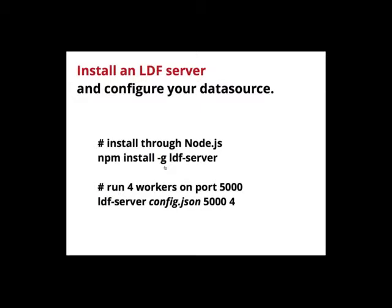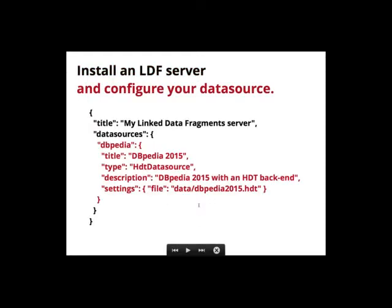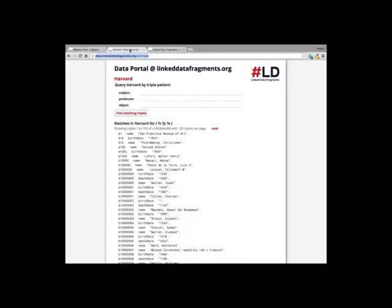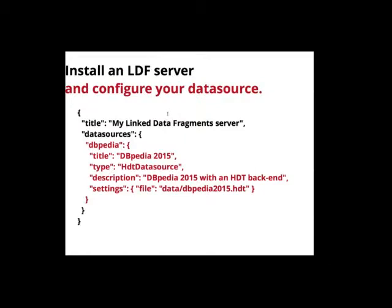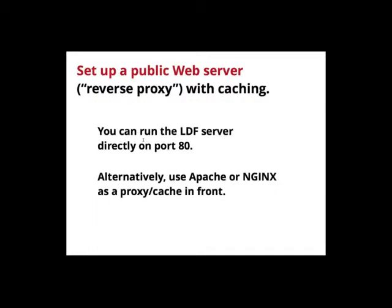The second step is to install a linked data fragments server and configure your data source. For Node.js, you install the LDF server globally, set up a config file, and run it — in this example on port 5000 with four CPUs. The configuration file is really simple: you list a data source, give it a name like DBpedia, specify the HDT type, and provide the path to your HDT file. One server can host multiple data files — in the Harvard example, it was actually hosted on our server which has many different datasets. You install the server, configure a data source, and the server is running.